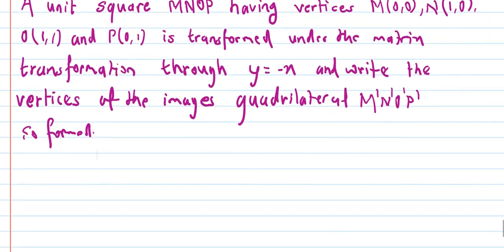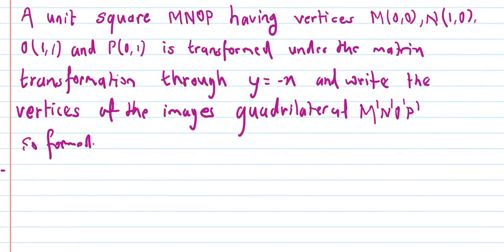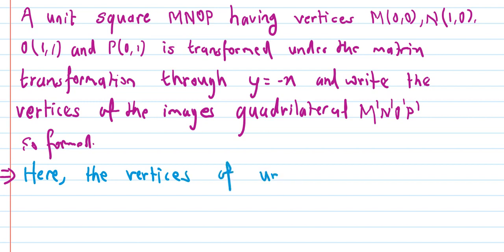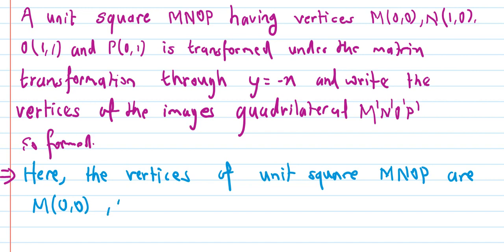First of all, given: the vertices of unit square MNOP are M(0,0), N(1,0), O(1,1), and P(0,1).